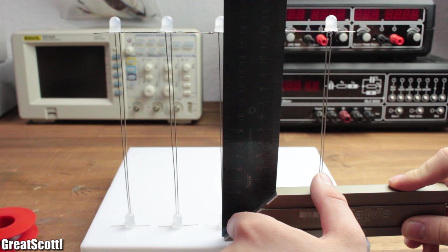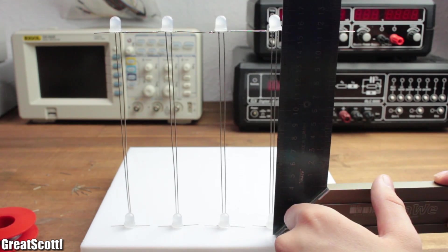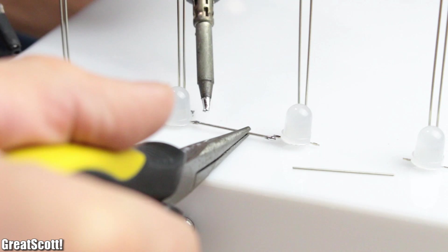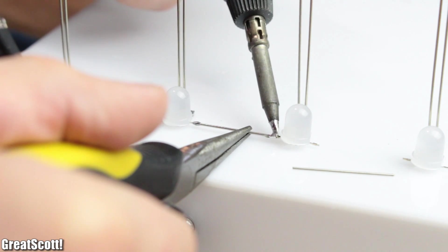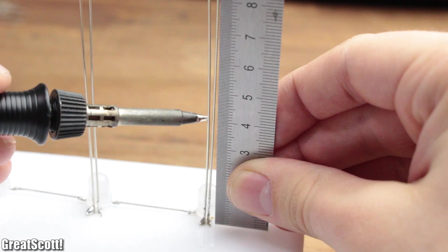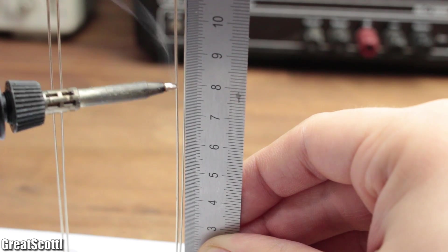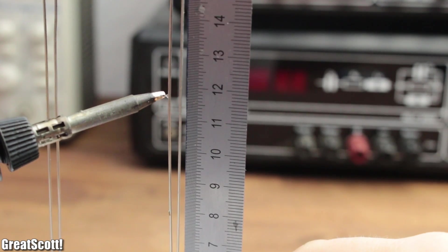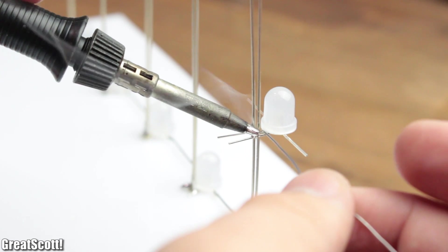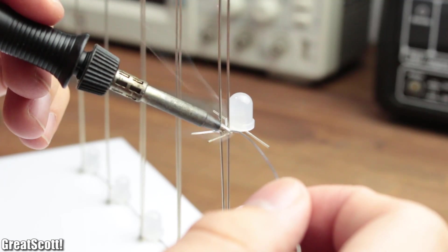Once everything looked fine, I repeated the data pin connection procedure for the 5 LEDs at the base plate. Afterwards I marked the 4.1, 7.9 and 11.7 centimeter spots on the copper wires. This is where we need to solder the remaining 15 LEDs of the first wall.